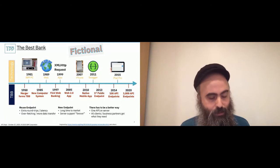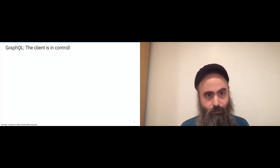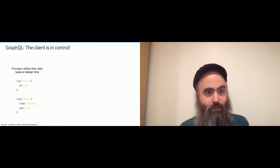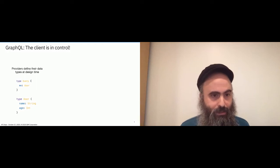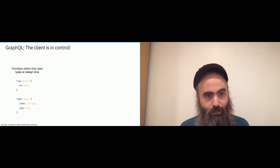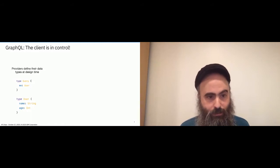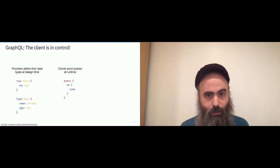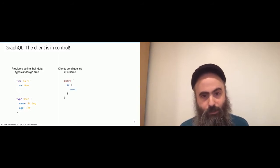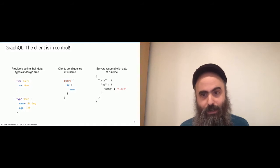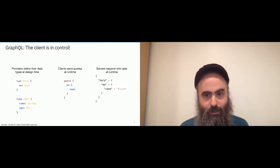The first thing TBB discovers about GraphQL is that the main principle is the client is in control. The provider — the server — can define their data at design time. In this small example, they say you can query for 'me', meaning the logged-in user, retrieving the user record and asking for name or age. The client sends the query at runtime — say just 'me' and 'name' — and if the logged-in user is Alice, she gets back that her name is Alice. Notice the response comes back looking a lot like the query: 'me' corresponds to 'me', 'name' corresponds to 'name'. So it's very predictable responses.